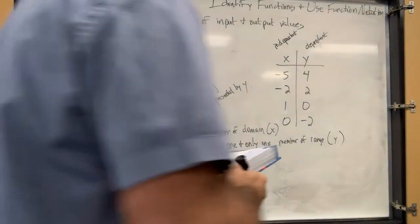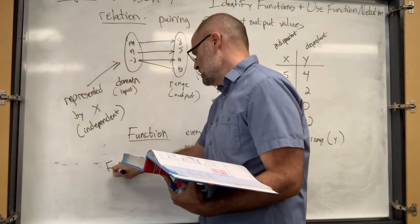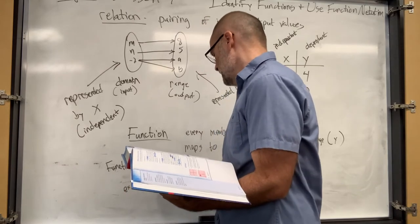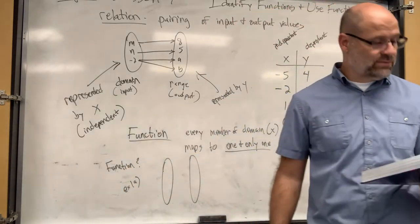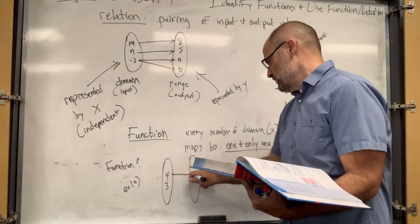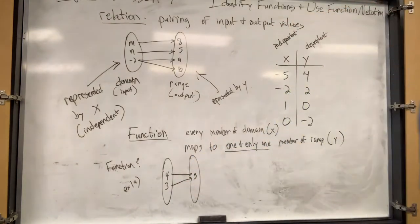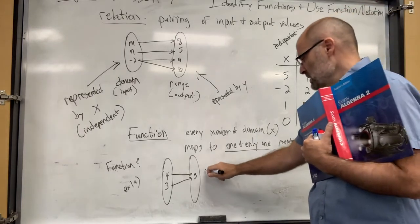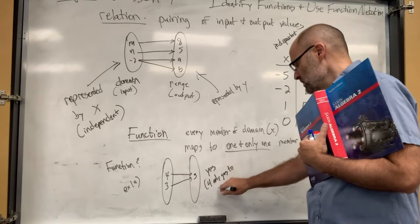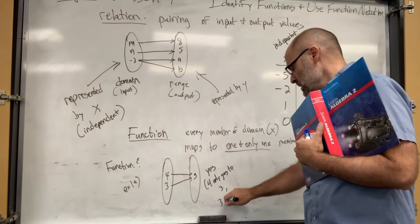Tell me if this is a function. Here's example 1A - here's the domain and the range with some elements. Is this a function? Yes, because 4 only goes to 3 and 3 on the left side only goes to 3. So this is a function - 4 only goes to 3, and 3 only goes to 3.